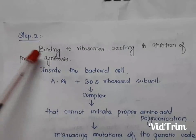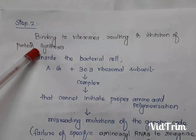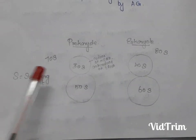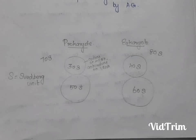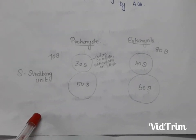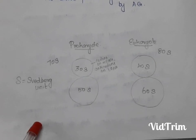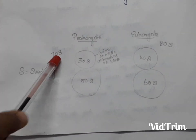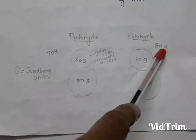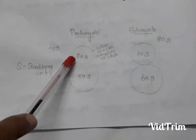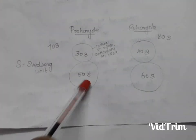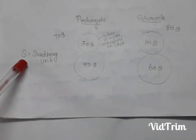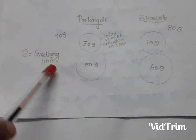Step two is binding to ribosomes, resulting in inhibition of protein synthesis. Ribosomes are important for protein synthesis — they are minute particles consisting of rRNAs and associated proteins that bind to mRNA and tRNA to synthesize polypeptides and proteins. There are two types: 70S present in prokaryotes and 80S present in eukaryotes. The 70S ribosome has two subunits: 30S and 50S. The 80S ribosome has two subunits: 40S and 60S. The 'S' indicates the Svedberg unit.